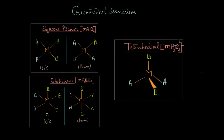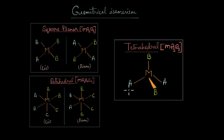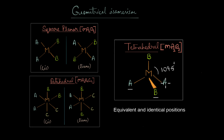This is exactly what you see in square planar and octahedral complexes, where cis and trans isomers are unique and the positions of the ligands are not equivalent. But in a tetrahedral complex like MA2B2, the ligands A and B occupy the four corners of a tetrahedron. Tetrahedral geometry is highly symmetrical, and all ligands are equally spaced from each other at a bond angle of 109.5 degrees. The relative positions of the ligands are the same with respect to each other.